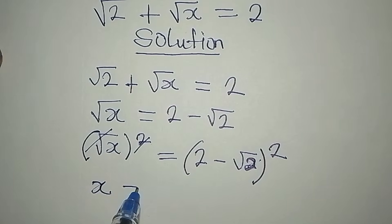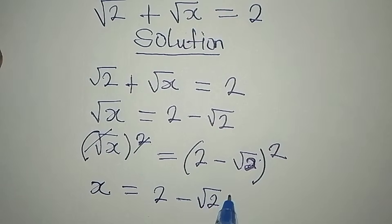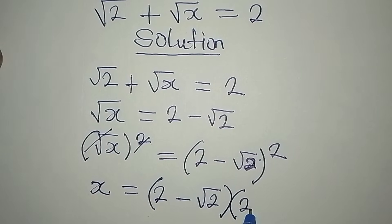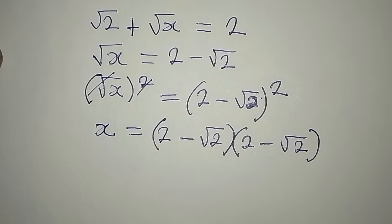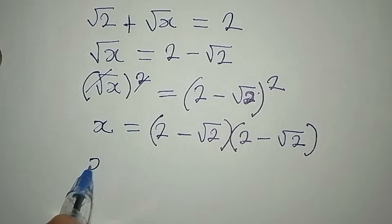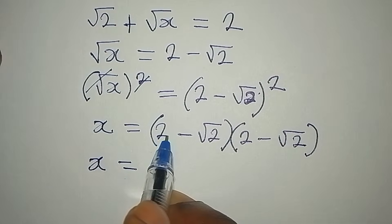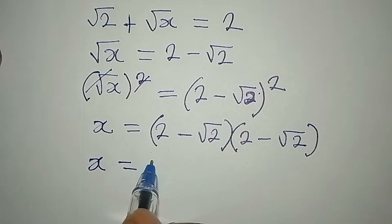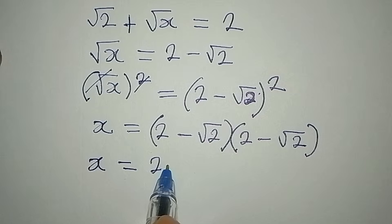So x is equal to 2 minus square root of 2, in two places: 2 minus square root of 2. Now how do I deal with this? We have x already, and that is equal to — now we're going to try to open the bracket.